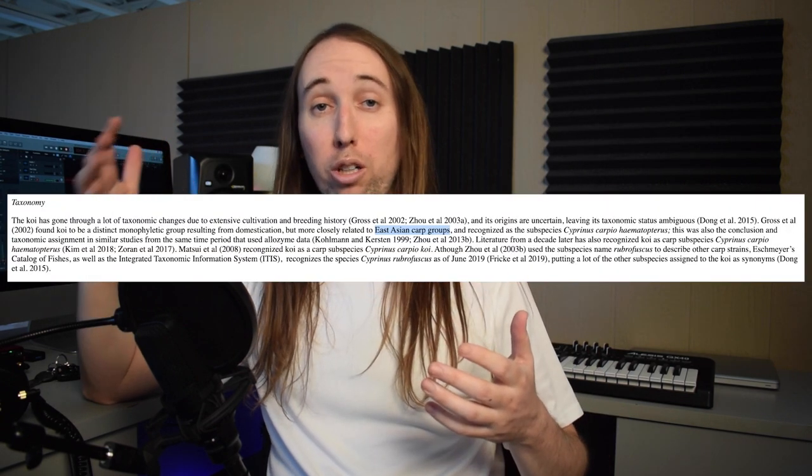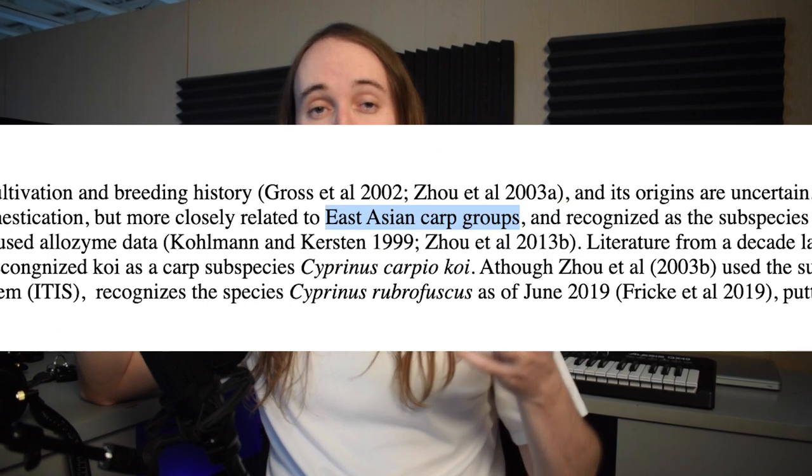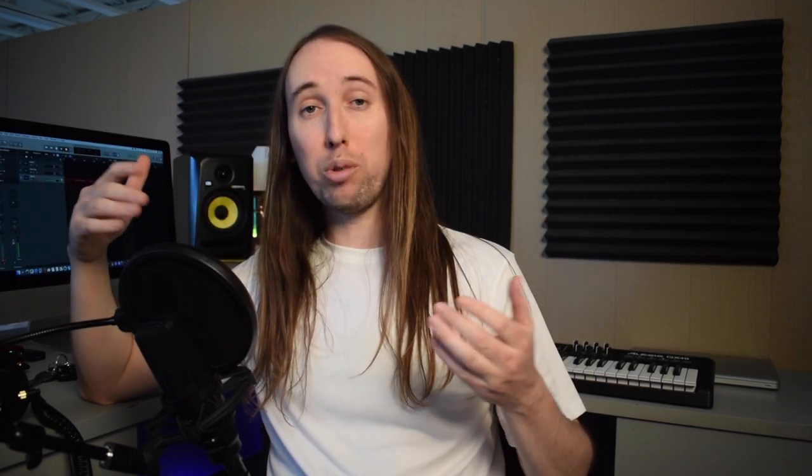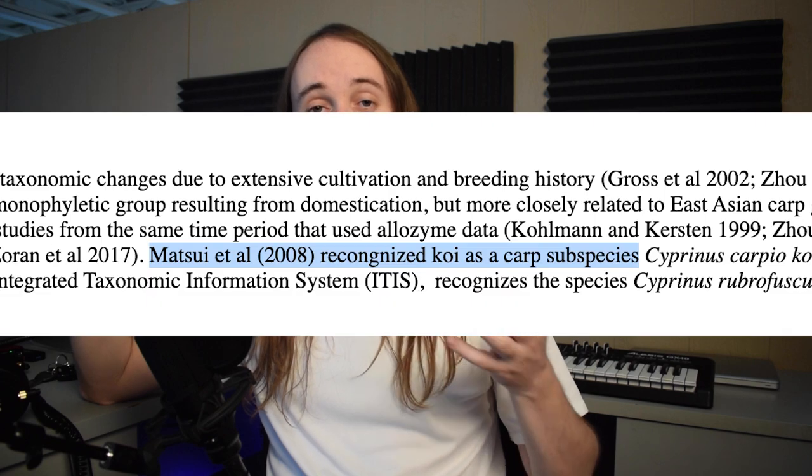To determine if butterfly koi are actual real koi, we need to look at the origin of traditional koi fish. Some say they originate from the black carp, others from the Amur carp or other kinds of Asian carp. But according to the USGS.gov website, their origins are ultimately unknown, although they are closely related to East Asian carp groups. And in 2008, koi was actually recognized as a carp subspecies.